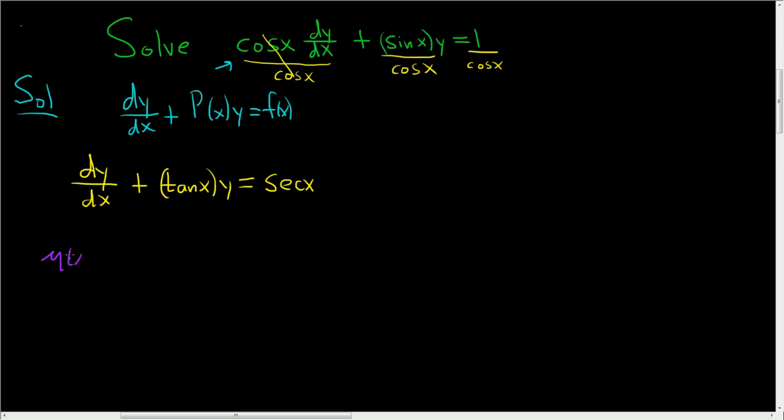So μ(x) is equal to e to the indefinite integral of this piece here, so the tangent of x dx. And if you forget how to integrate tangent, we write it as follows. This is sine x over cosine x dx. And I suppose we could just do it really quick.